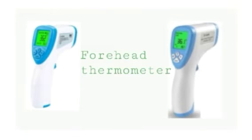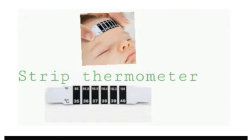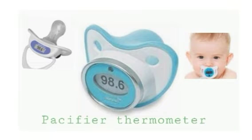Forehead thermometers also read heat using infrared and are placed on the temporal area. Plastic strip thermometers can detect the presence of a fever in a patient — we just place the strip on the forehead. Pacifier thermometers are used predominantly in babies older than three months.